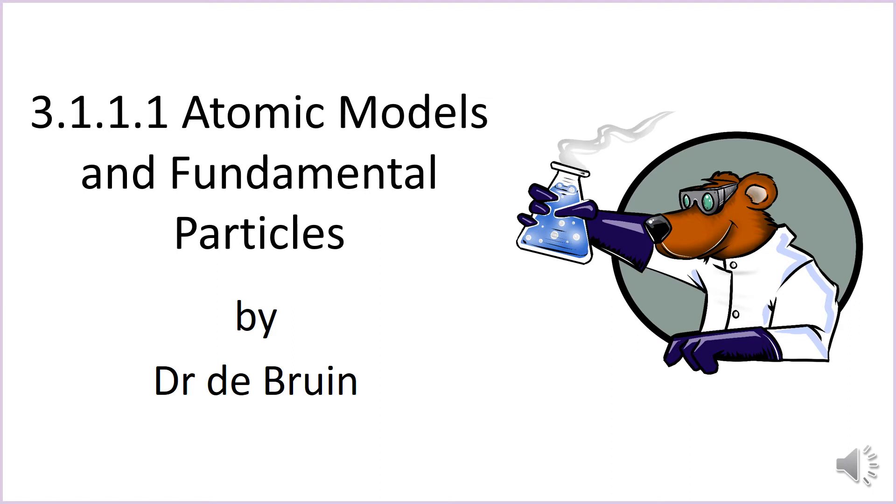This is a video describing the various models of the atom that we've used over the last 250 years or so. The key thing is that as scientists have done experiments, they've used their data to update and improve the model of the atom that we currently use. If you're doing A-level chemistry, we're not going to go into subshells and orbitals in this video. That is covered separately in the video about electron arrangement.